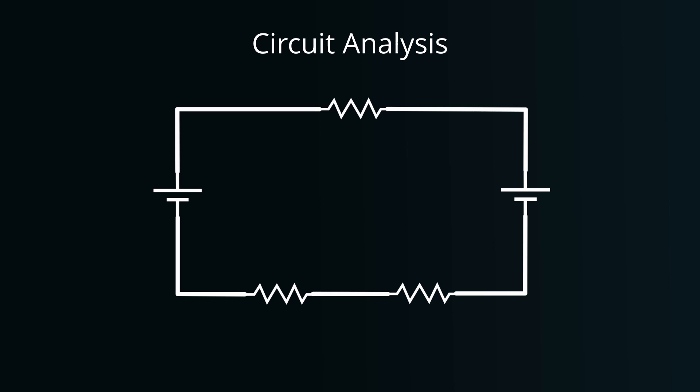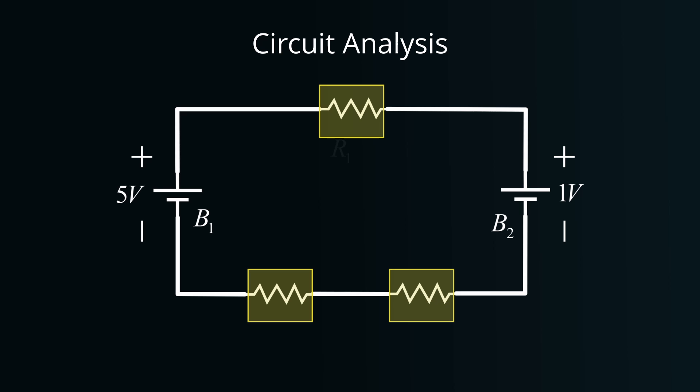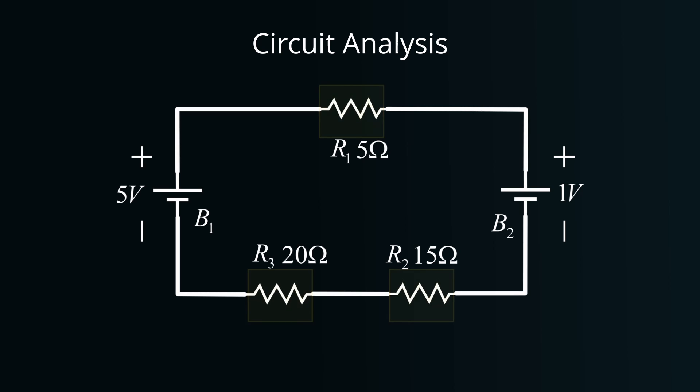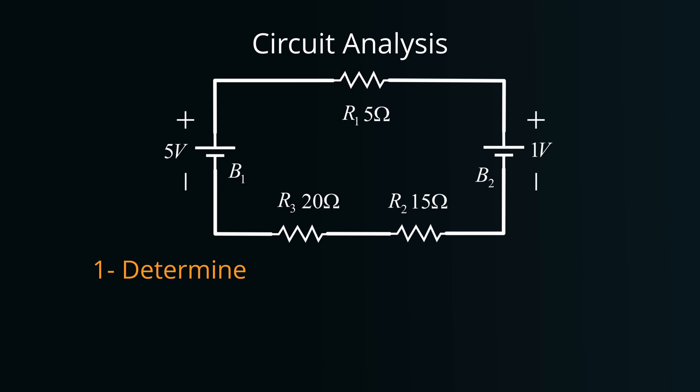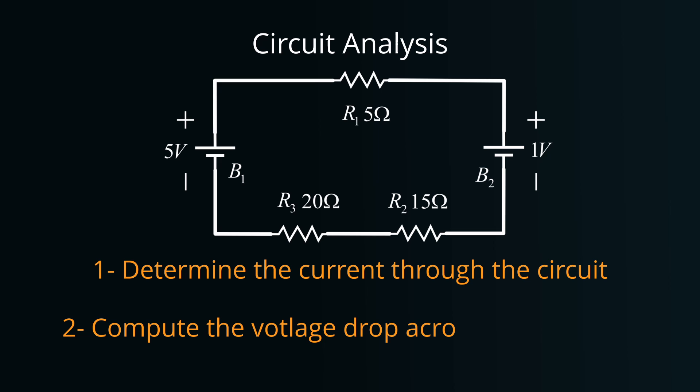Consider the following scenario. We're presented with a circuit that features two batteries in series, one supplying 5 volts and another offering 1 volt. This circuit also houses three resistors: R1 with a resistance of 5 ohms, R2 with 15 ohms, and R3 with 20 ohms. Now let us determine the current I flowing through this circuit, and subsequently compute the voltage drop across each resistor. Let's delve in and use KVL to solve this.